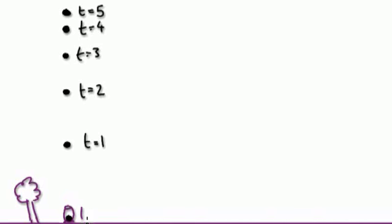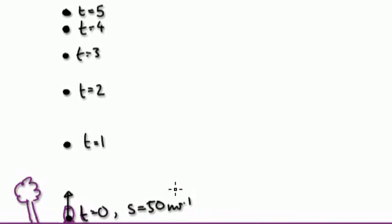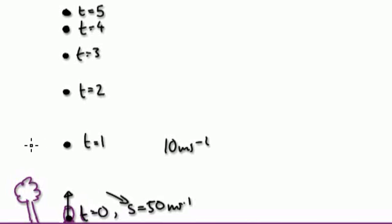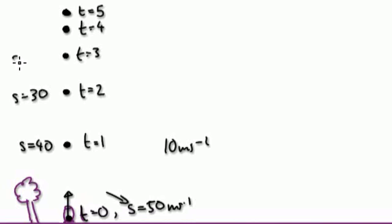At t equals zero, the speed is 50. Because acceleration is 10 meters per second squared downwards, every second the speed decreases by 10. So at one second the speed is 40, then 30, then 20, then 10 — notice it's getting slower and slower. Then the speed reaches zero: that's when the cannonball comes to a stop.